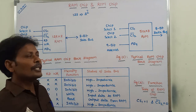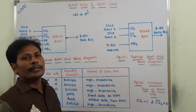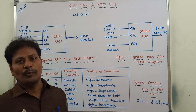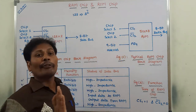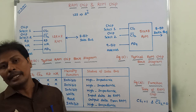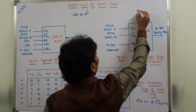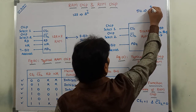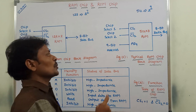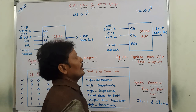The third input is AD9, which is a 9-bit address. This 9-bit address is used to select only one word among the 512 words. This is because 512 can be written as 2 to the power 9, so 9-bit address is required to select only one word among the 512 words.